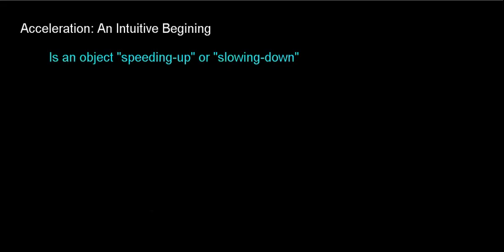In this video, we're going to define the commonly used phrase of acceleration. A few key words that you see when you talk about acceleration are an object speeding up or slowing down. These relate to how the velocity changes over time. An object whose velocity is increasing is said to be speeding up, whereas an object whose velocity is decreasing is said to be slowing down.